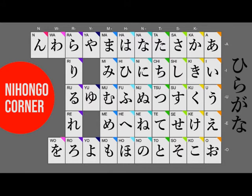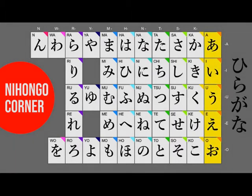Selanjutnya, kita perhatikan barisan paling kanan dari atas ke bawah. Ini adalah huruf A, I, U, E, O. Barisan huruf A ke bawah disebut A-gyou atau barisan A.